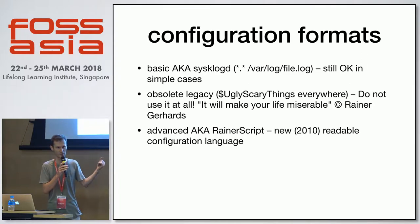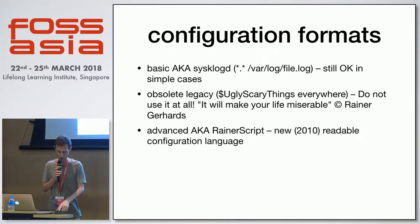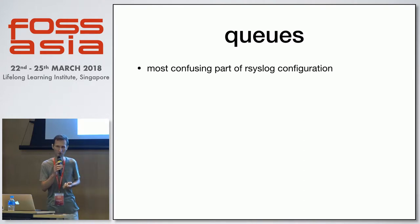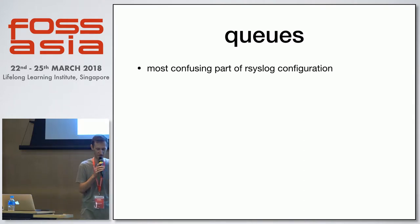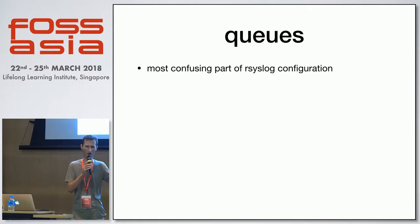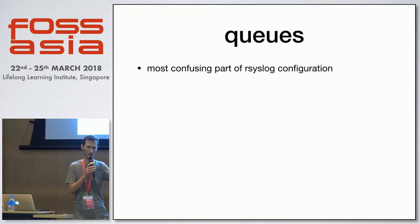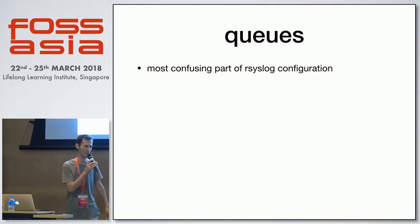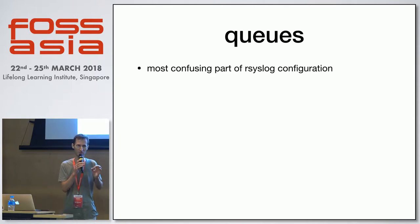Now let's check queues, which are the most confusing part of rsyslog configuration. When you need to understand how much queue length you need to survive latency or delays on output channels — it's really hard. I will only talk about things which are not clear in the documentation.